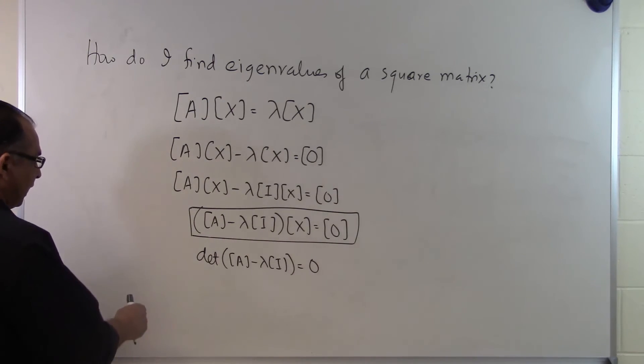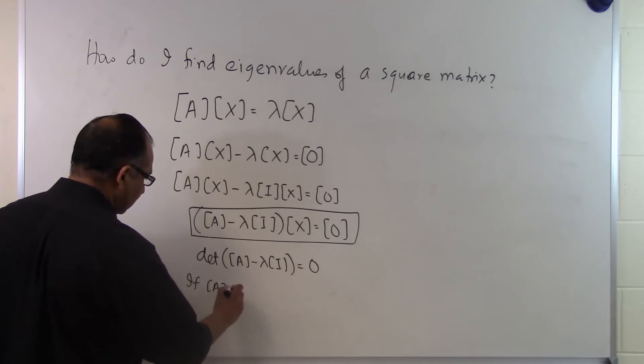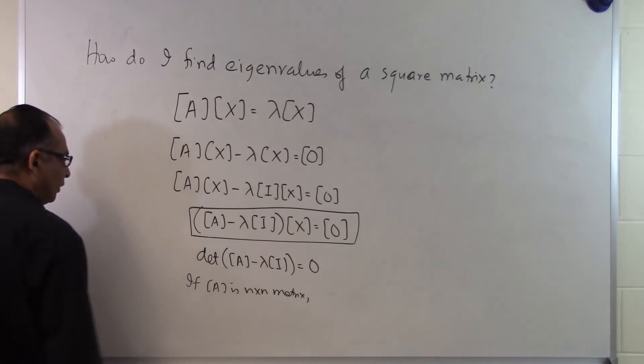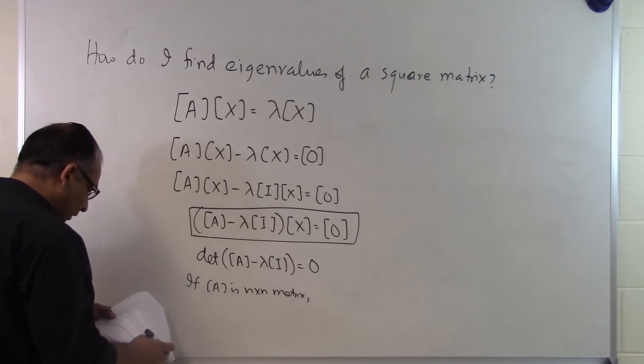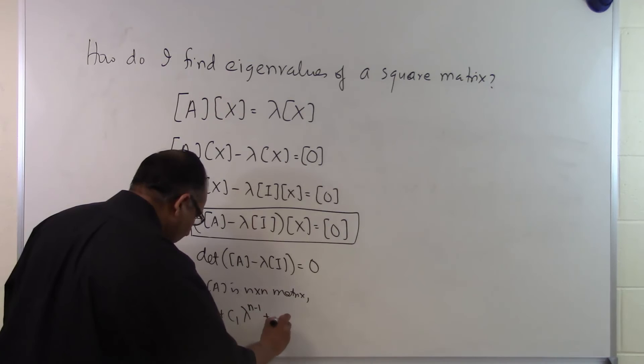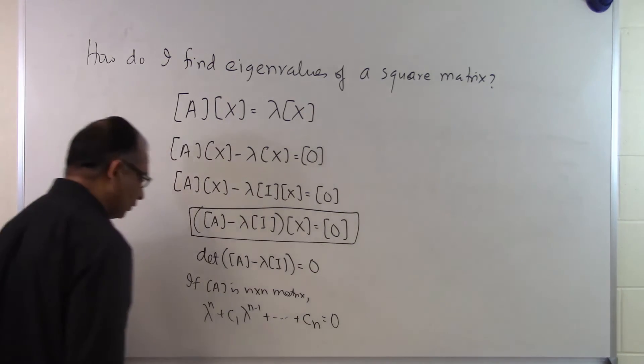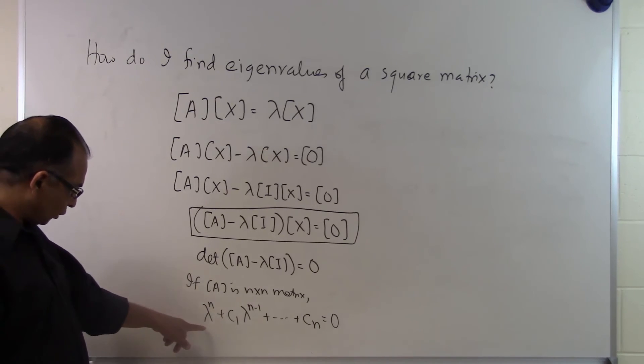What's going to happen is if A is an n by n matrix, so we are talking about the order of the matrix given as n, when you find the determinant of this matrix A minus lambda I, it's going to turn out to be of this form. You're going to get lambda to the N plus C1 lambda raised to N minus 1 plus so on and so forth plus CN equal to zero. That's what you're going to get. The form of the expansion of this determinant of this matrix is going to turn out to be of this form.